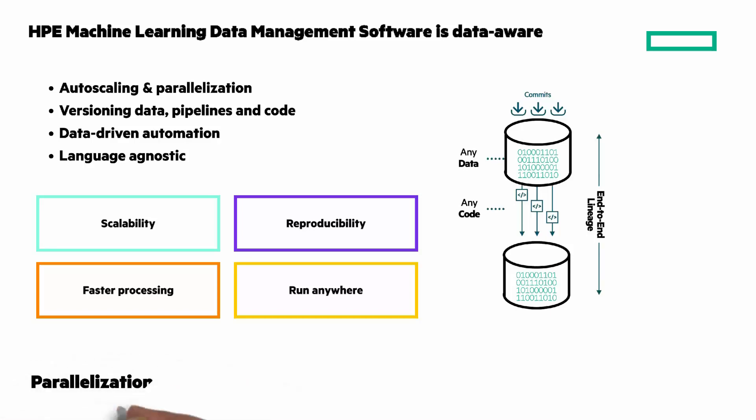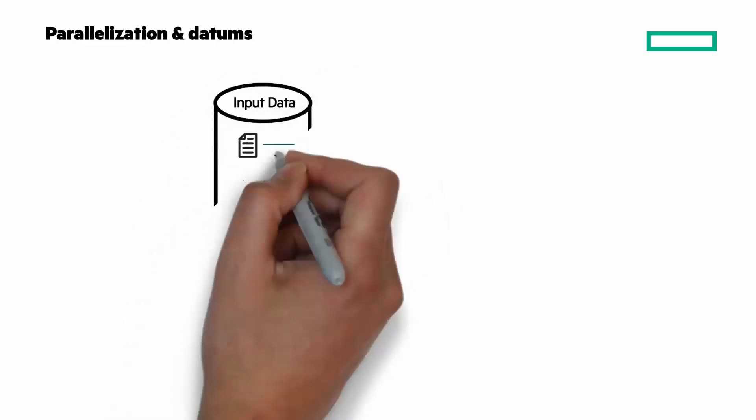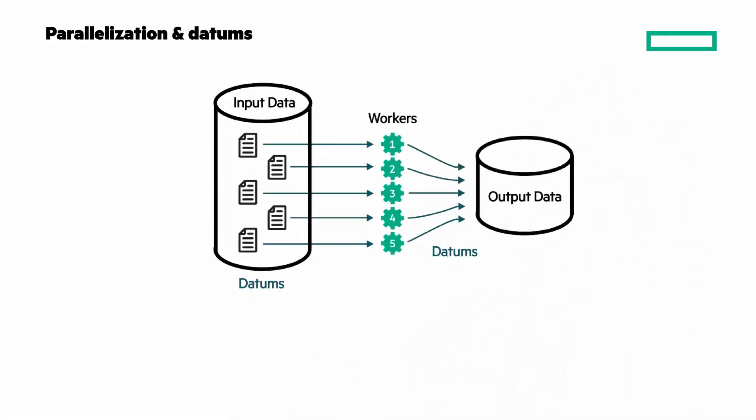The parallelization feature is unique to our offering. The software shards or chunks up the data into datums. Because a datum is a single unit of work, it can be processed in isolation. A datum is user-defined and can be a single database record, an image, or single or multiple files. This has a powerful scalability benefit because any datum can be processed in parallel with the others, and the work can be allocated to any available workers.